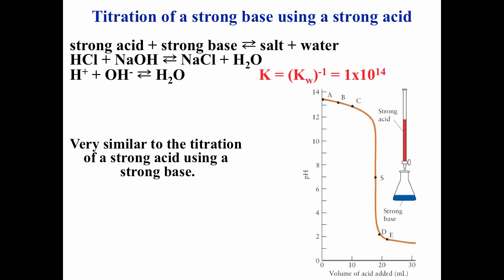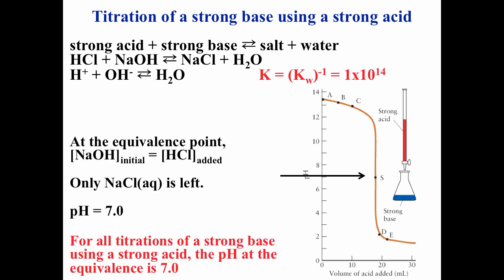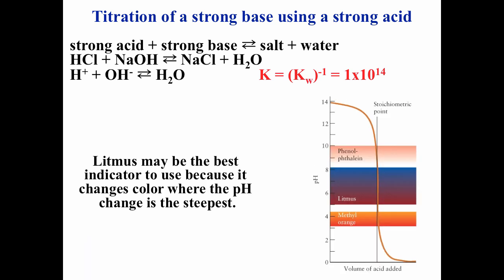For a strong base–strong acid titration, the flask contains the strong base so pH starts very high. As you add the acid, the pH goes down — similar in shape to the strong acid–strong base curve. At the equivalence point, the large equilibrium constant drives the reaction to completion, leaving sodium chloride and water, so the pH is 7. Litmus is a great choice for this titration because it changes color at the equivalence point.